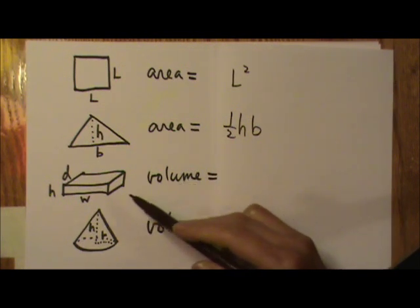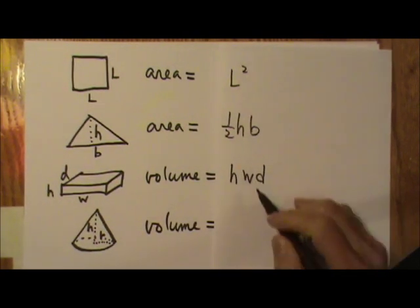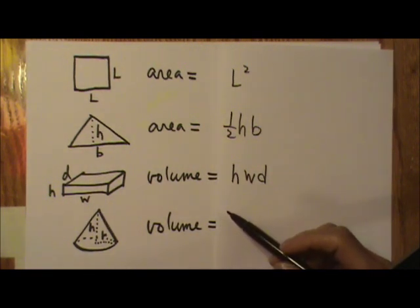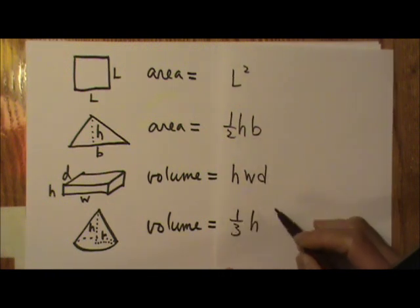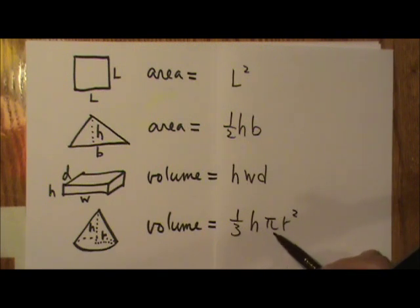The volume of a rectangular prism is height times width times the depth. The volume of a circular cone is one third height times pi r squared. One third and pi do not have any units, so the unit comes from the height times radius squared. Length times length times length, which gives you meters cubed.